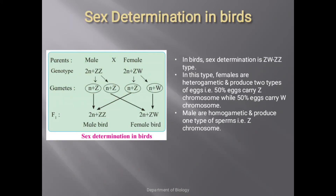The next topic is sex determination in birds, which is the ZW-ZZ type. In this type, females are heterogametic and produce two different types of eggs — 50% carry the Z chromosome and 50% carry the W chromosome. Males are homogametic and produce only one type of sperm carrying ZZ chromosomes. The sex of the individual depends upon the kind of egg fertilized by the sperm. Here the sex is determined by the female, not the male.